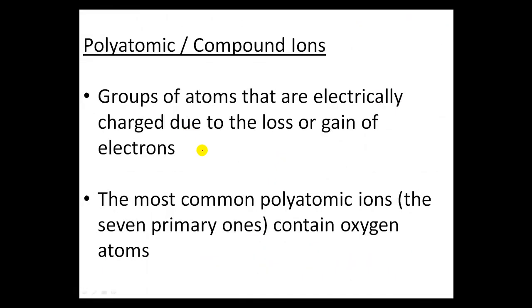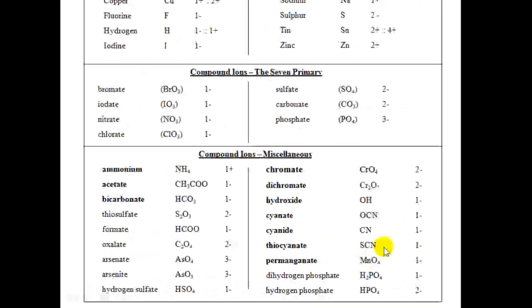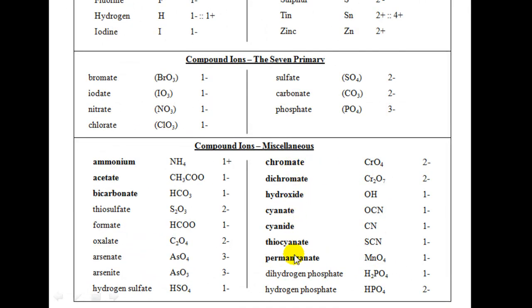The most common polyatomic ions that you'll be dealing with in this course are the 7 primary ones. They are the ones that contain oxygen atoms and are located in the center of your sheet. However, we will also be dealing with these miscellaneous compound ions — I have bolded the most common ones, so those are the ones you should definitely know. The unbolded ones will potentially be used in this course, but not as often as the bolded ones or the 7 primary compound ions.